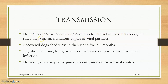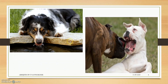Transmission: urine, feces, nasal secretions, vomitus, etc. can act as transmission agents because they contain numerous copies of the virus. Recovered dogs shed virus in their urine for around six months. However, they can be vaccinated and the titer of virus present in the urine of a recovered infected animal can be decreased. The main transmission is via direct contact and indirect contact — for example, an uninfected animal drinking water that contains urine from an infected animal.